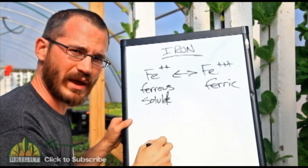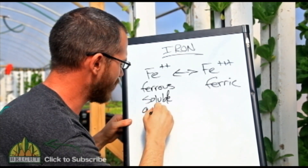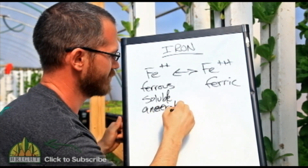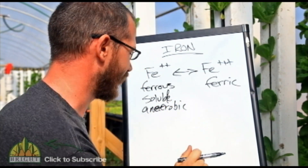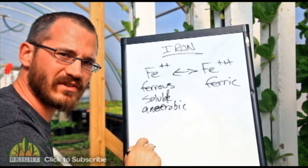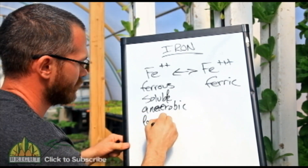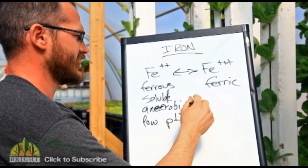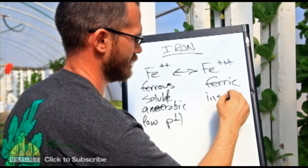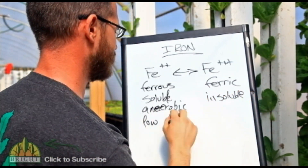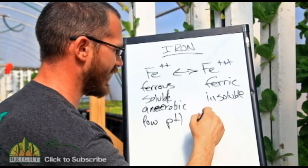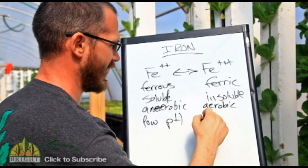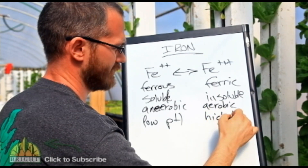Soluble iron exists primarily in anaerobic conditions and low pH. Ferric iron, insoluble, exists primarily in aerobic and high pH conditions.